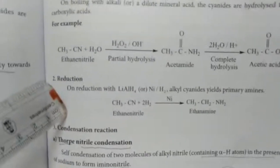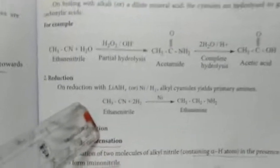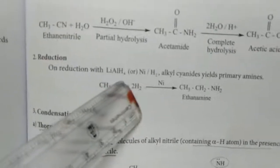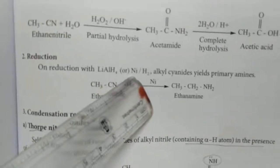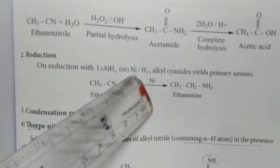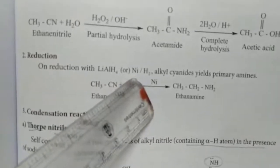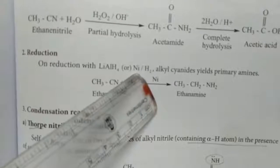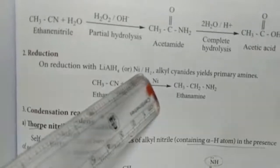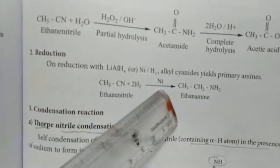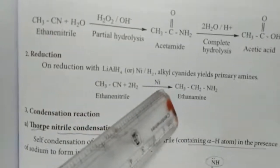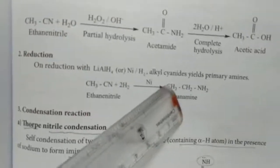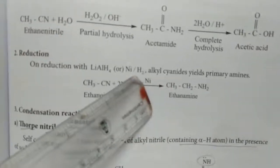Reduction reaction: when nitrile undergoes reduction in the presence of a catalyst like nickel or lithium aluminum hydride, it gives a primary amine. Ethanamine will be formed as the primary amine product.